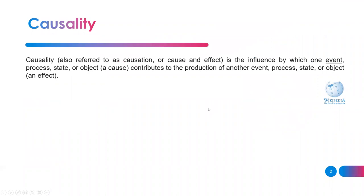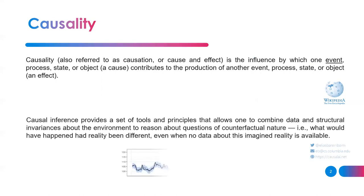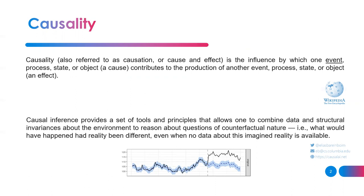Causality is defined as the influence by which one event, process, state, or object — a cause — contributes to the production of another event, process, state, or object — an effect. Causal inference, on the other hand, is defined as the set of tools and principles that allow one to combine data and structural invariances about the environment to reason about questions of counterfactual nature: what would have happened had reality been different?